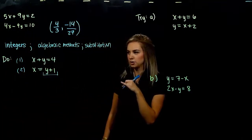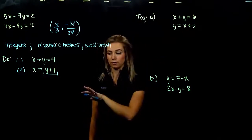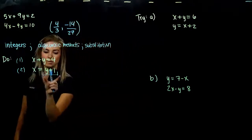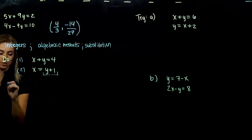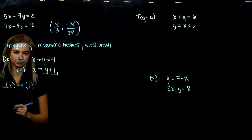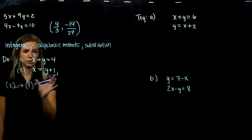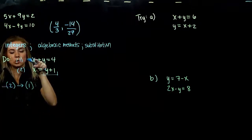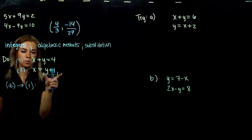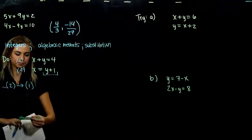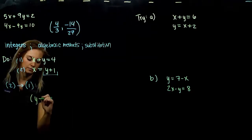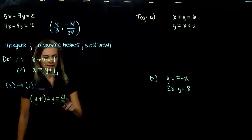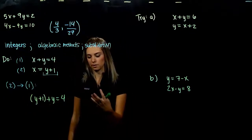Looking at equation 2, the nice part is that one of my variables is already isolated — I know that x is equivalent to the entire quantity y plus 1. So we're going to use that to our advantage to make an equation in just one variable that we can then solve. Wherever I see an x in equation 1, I'm going to substitute in y plus 1, since I know those things are equivalent.